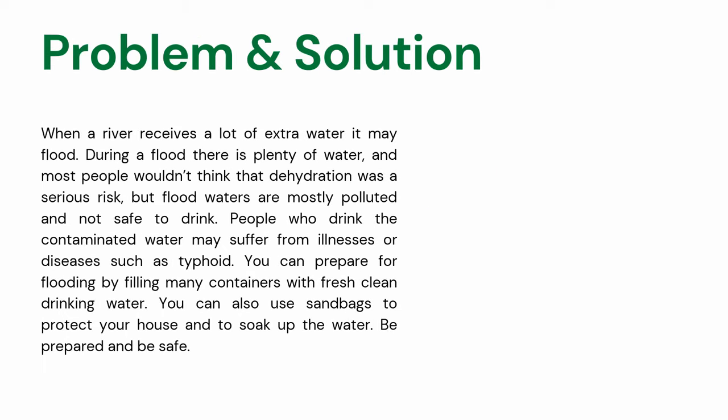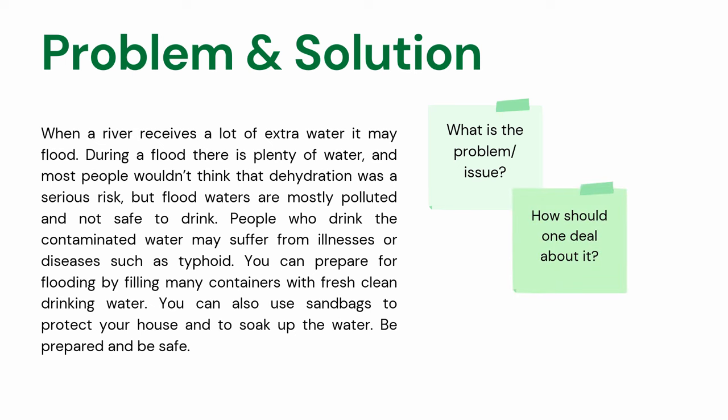Problem and Solution: When a river receives a lot of extra water, it may flood. During a flood, most people wouldn't think that dehydration was a serious risk. But floodwaters are mostly polluted and not safe to drink. People who drink the contaminated water may suffer from illnesses such as typhoid. You can prepare for flooding by filling many containers with fresh, clean drinking water. You can also use sandbags to protect your house and to soak up the water. Be prepared and be safe. Questions: What is the problem or issue? How should one deal with it? And what other possible solutions can you suggest?